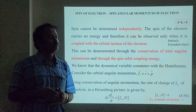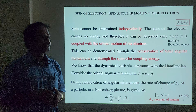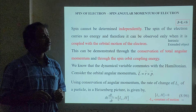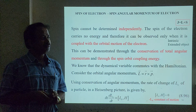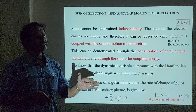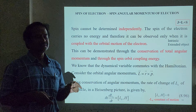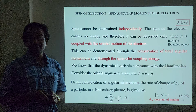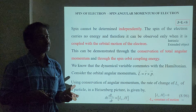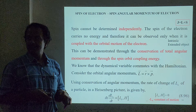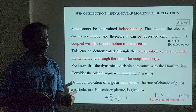We know the spin concept from earlier — in 1921 when Stern and Gerlach performed a beautiful experiment. A beam of silver atoms passing through an inhomogeneous magnetic field produces two spots observed on the screen. When the magnetic field is on, there are two spots. Classically, spin would have all orientations, whereas in quantum mechanics only two spots are observed: one for spin up and one for spin down.